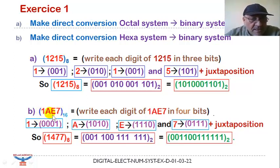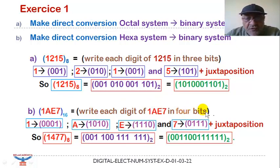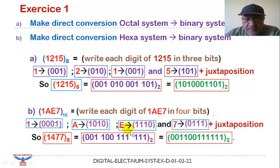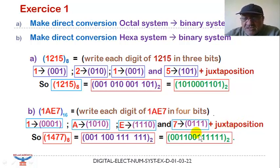For the second question, we convert hexadecimal number 1AE7 to binary. The method consists in writing each digit in four bits: 1 gives 0001, A gives 1010, E represents 14 so it gives 1110, and 7 gives 0111. As before, we make a juxtaposition of these results to obtain the final result in binary system.